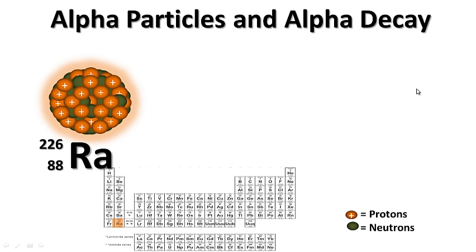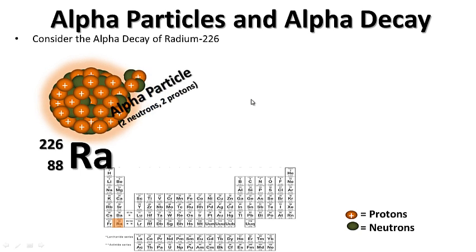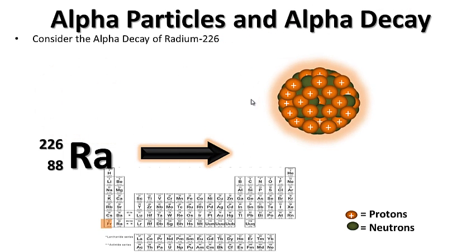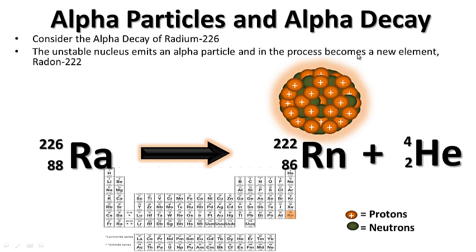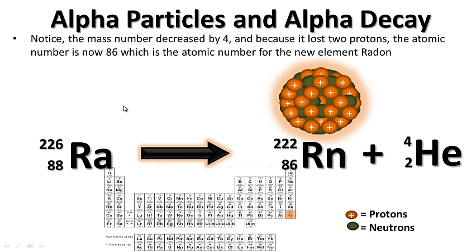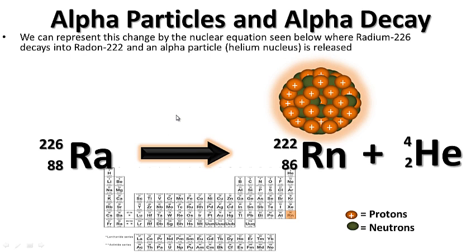Let's look at one more example: radium-226. It emits an alpha particle — two neutrons, two protons. The unstable nucleus emits an alpha particle and becomes a new element, radon-222. Notice the mass number decreased by 4 — 226 to 222 — and the atomic number went from 88 to 86, which is the atomic number for radon. We can represent this change by the nuclear equation where radium-226 decays into radon-222 and an alpha particle is released.